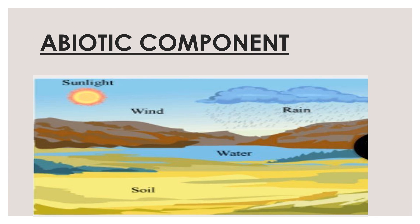The abiotic component includes air, water, soil, and climatic factors such as sunlight, temperature, humidity, and wind. Each of these has a specific influence on the life processes of various organisms. In this picture you can see all the abiotic components — rain, water, soil, wind, and sunlight — all are the non-living components of the environment.